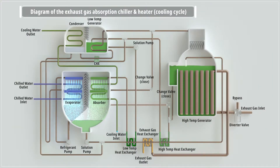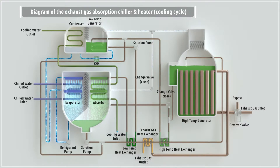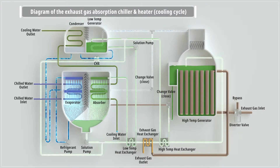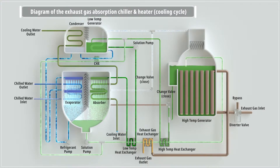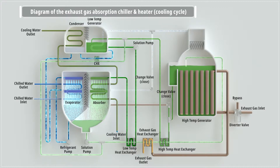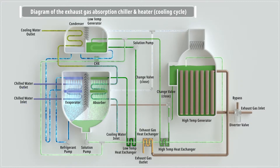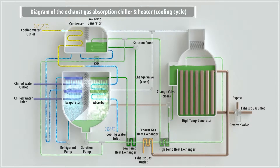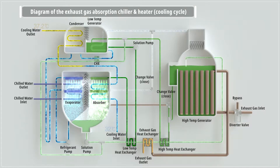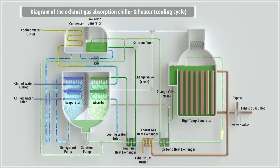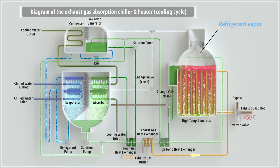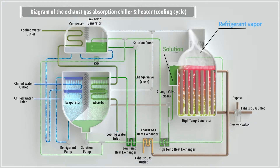Inside the CHP chiller, the refrigerant that cools down the inlet water is circulated by LiBr solution. After being used in cooling, heated chilled water flows through to the evaporator where the refrigerant evaporates and chilled water returns to the system. Vaporized refrigerant flows through to the absorber where it is mixed with the LiBr solution. The diluted solution from the absorber flows to the high temperature generator, where it is heated by exhaust gas heat, separating into refrigerant vapor and LiBr solution.